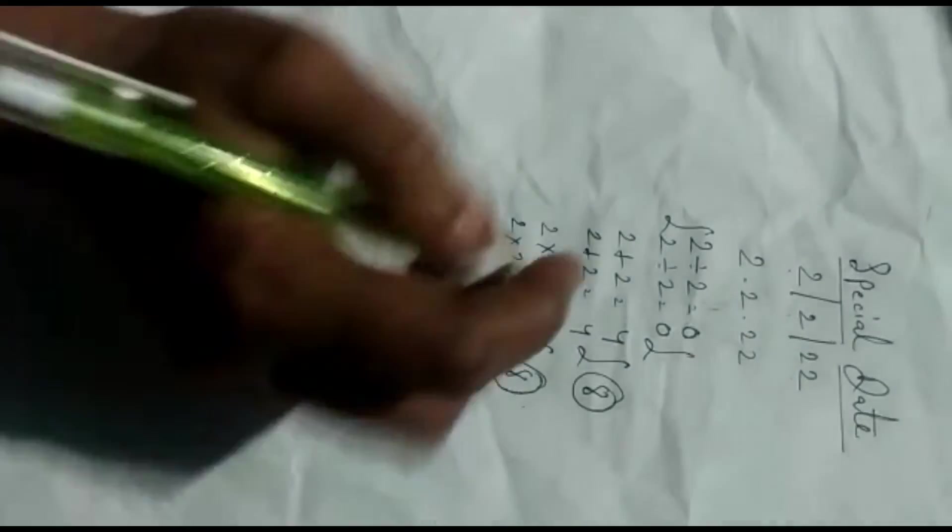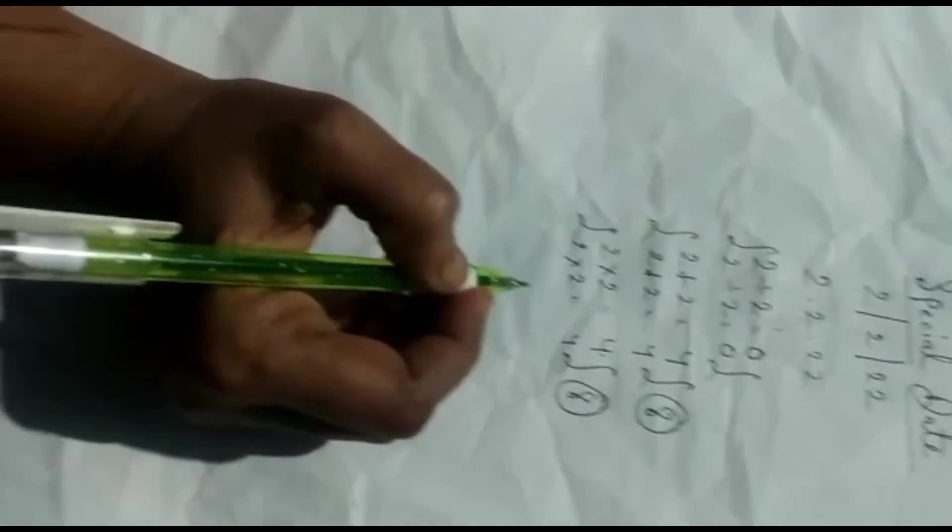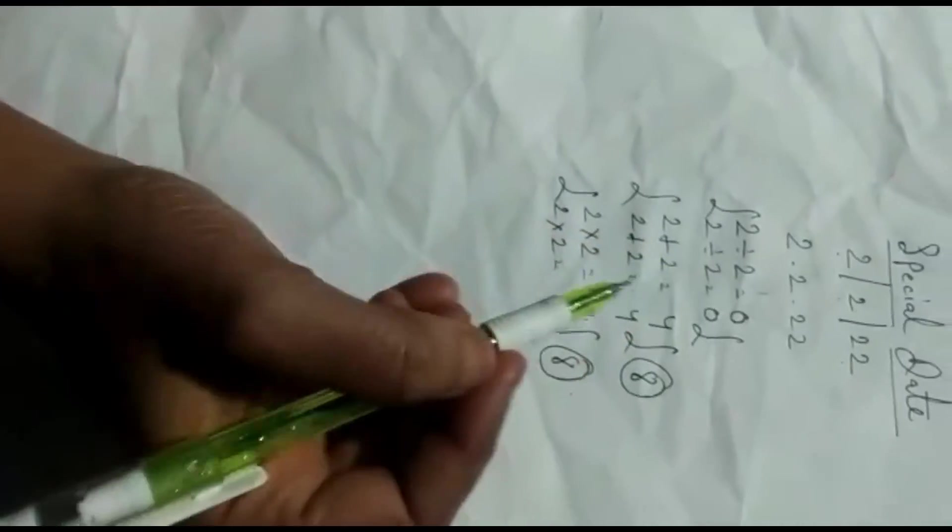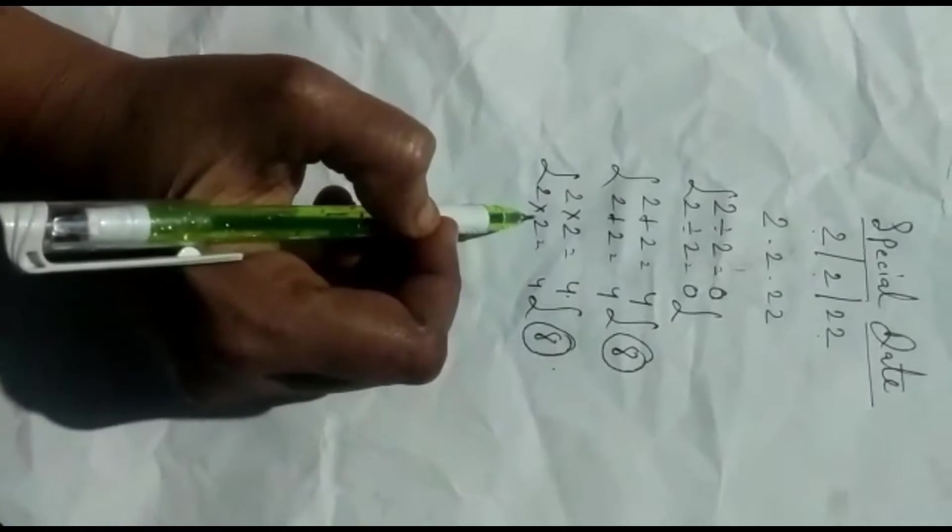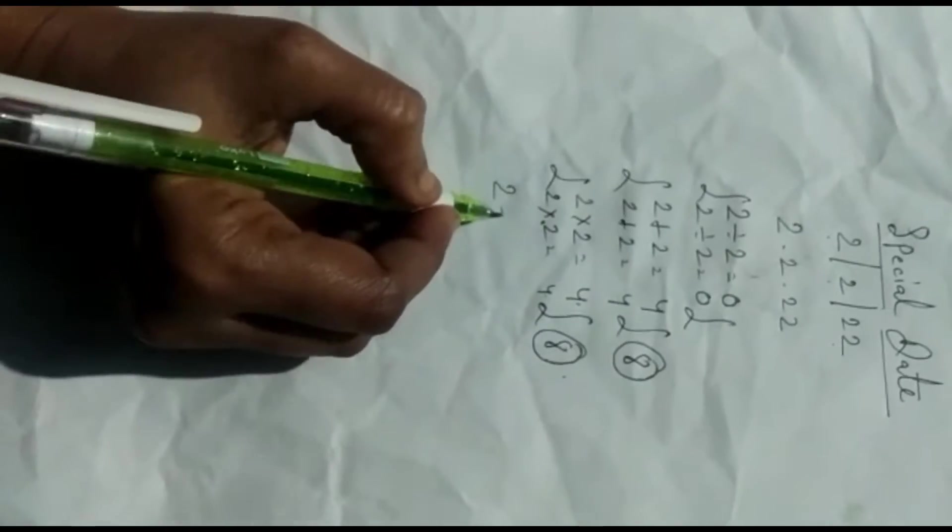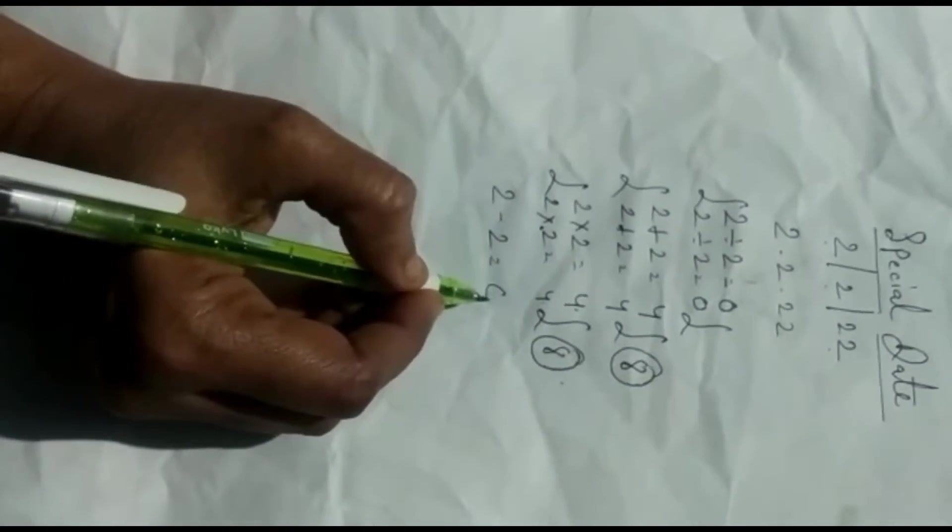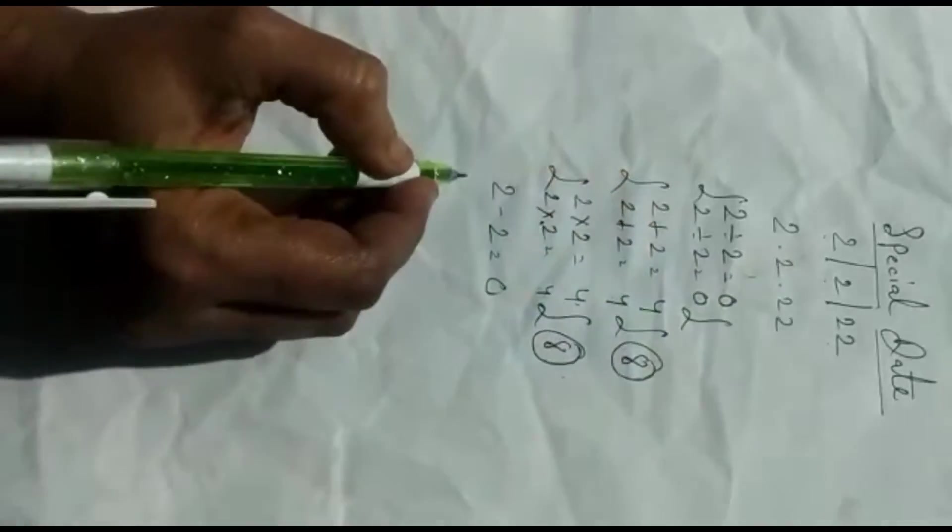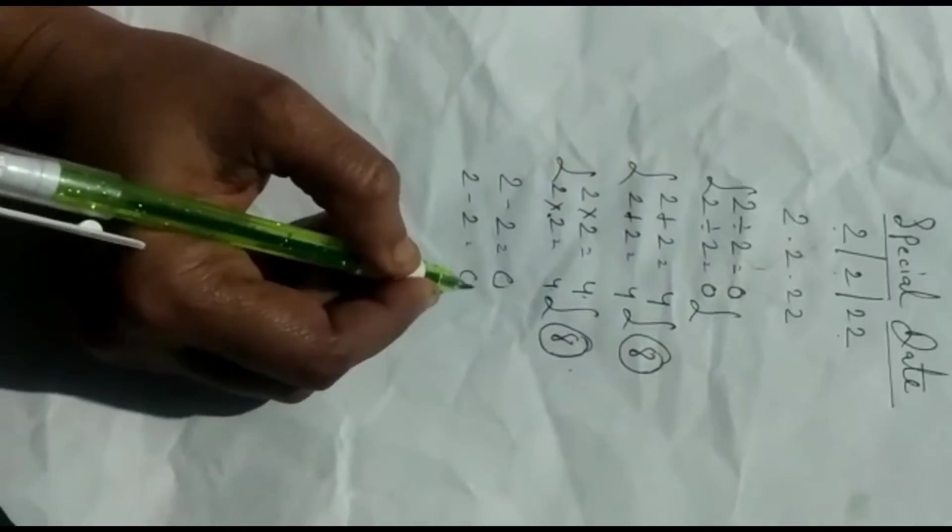We will do this again. There will be an interval, 1 and 3. 2 minus 2 is equal to 0, once again 2 minus 2 is equal to 0.